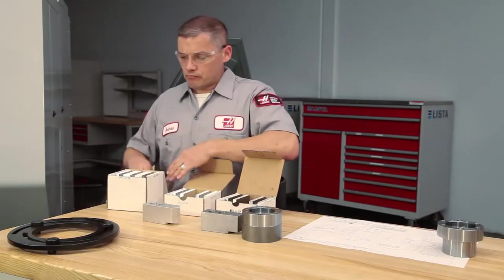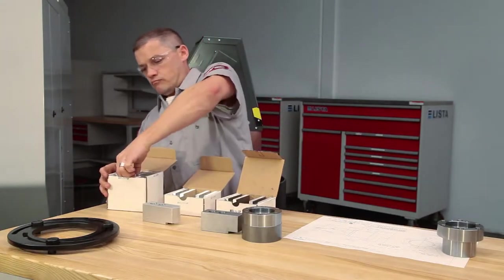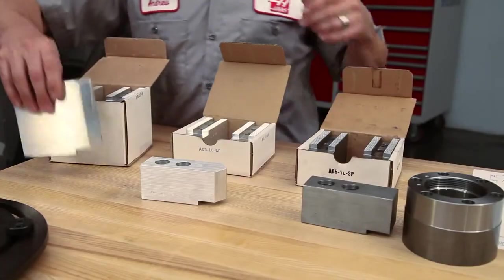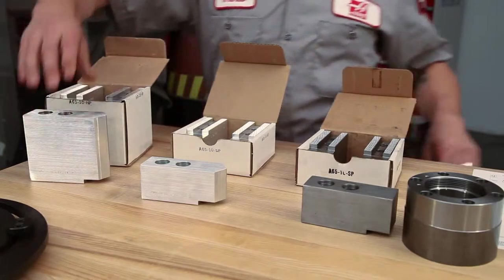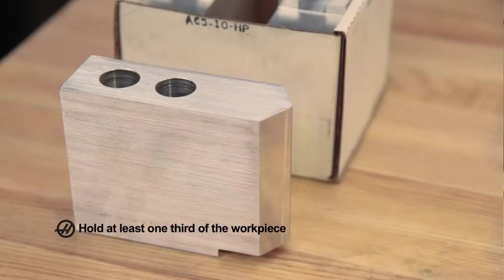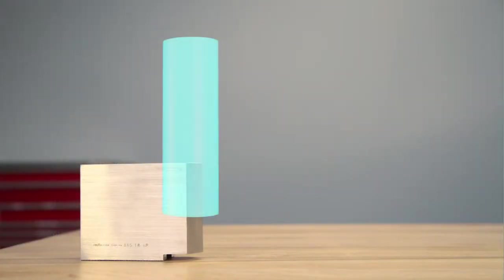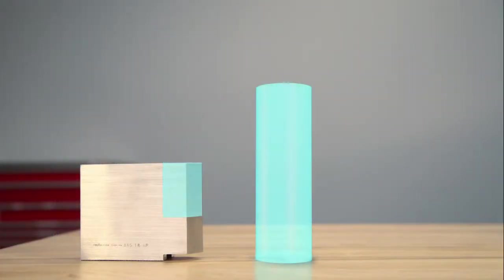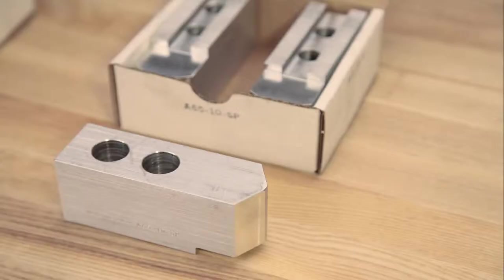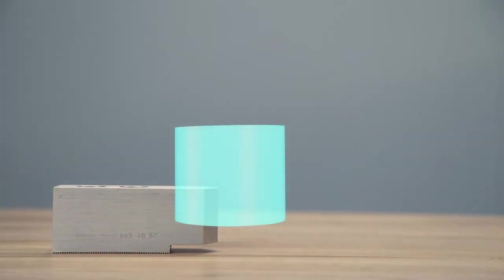Second, it's important to choose the right sized jaw. Soft jaws are available in a few different sizes. When choosing a jaw, it is recommended that you hold at least one third of the workpiece length. For a tall part, we can hold the recommended one third length with a taller jaw. And for a smaller part, we can still hold one third of the part with a small jaw.